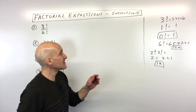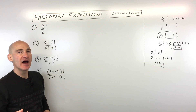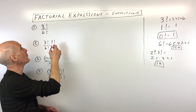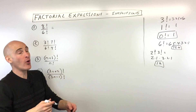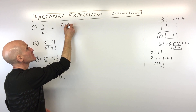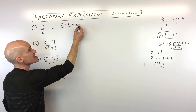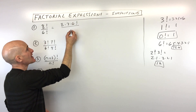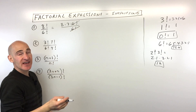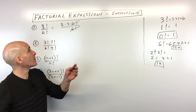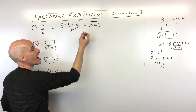Let's get into the examples. Number one: we've got eight factorial divided by six factorial. How would we simplify that? Well, eight factorial is eight times seven times six, all the way down to one. But what I'm going to do is stop once I get to six factorial, because that just represents six, five, four, three, two, one. The six factorial in the numerator cancels with the six factorial in the denominator. Now you just have to simplify eight times seven, which gives us 56.